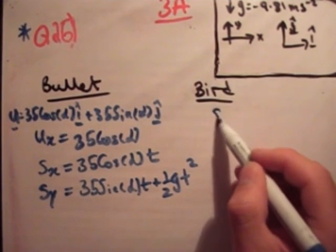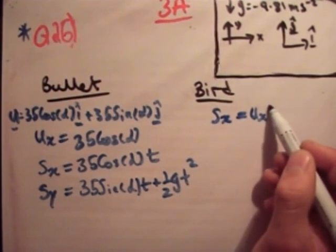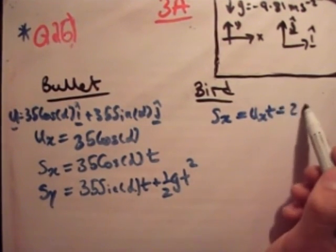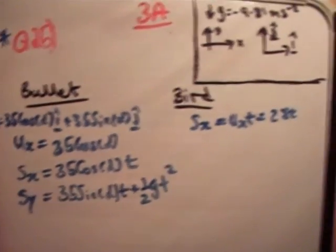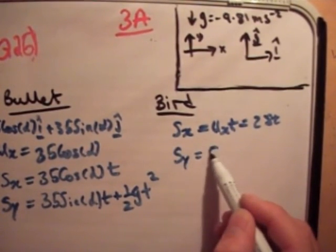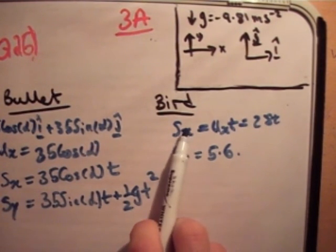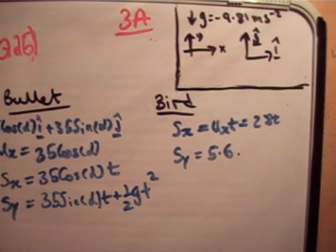For the bird we're going to get s sub x is equal to u sub x times t, which equals 28t. And s sub y is equal to 5.6. So there are the conditions, or the pieces we know. And we know that s sub x here should equal s sub x here, and so should s sub y.